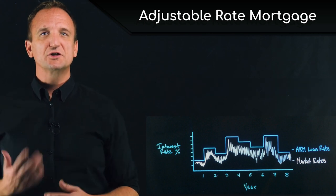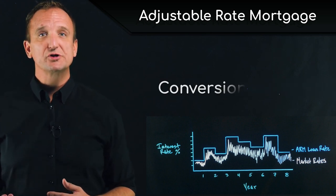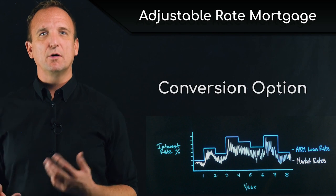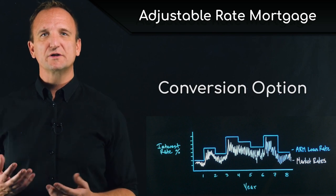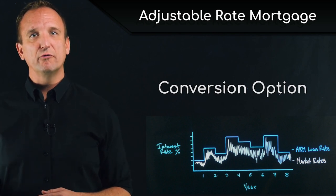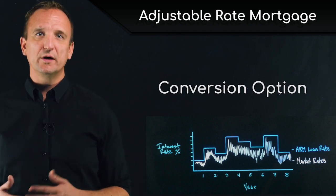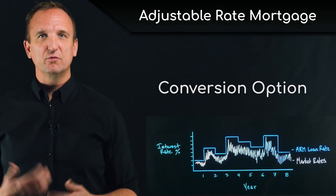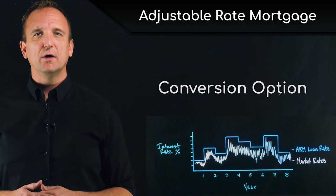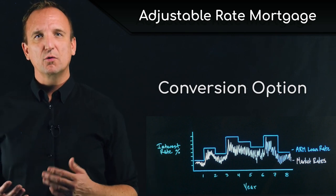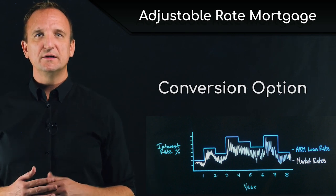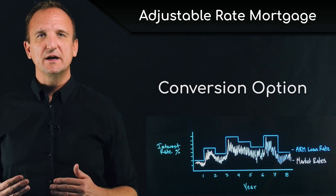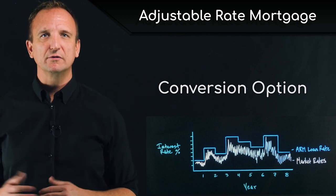Sometimes adjustable rate loans will have what's called a conversion option. That's the option the borrower can exercise in order to convert the loan from an adjustable rate to a fixed rate. Typically there's a fee associated with this conversion, but it gives the borrower the opportunity to lock in their interest rate and have it stay the same for the remainder of the loan.